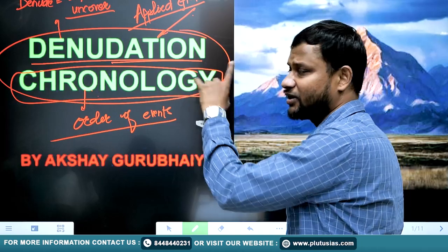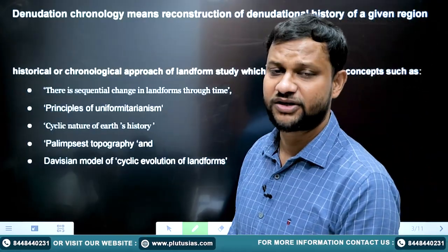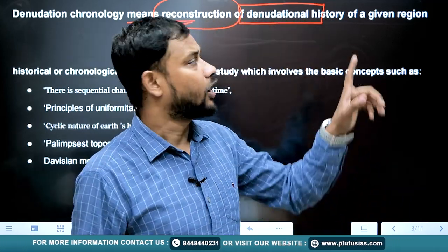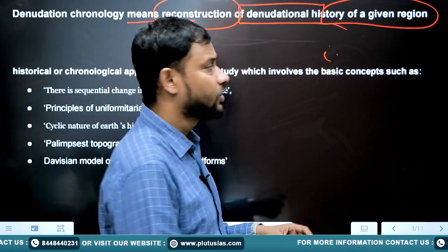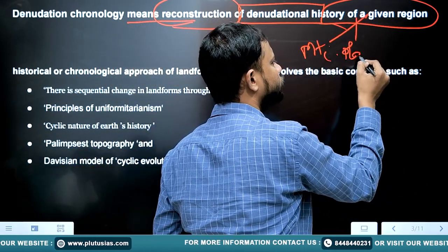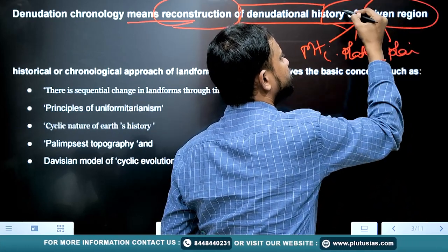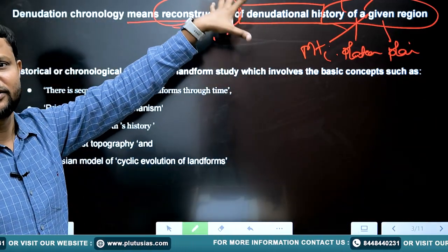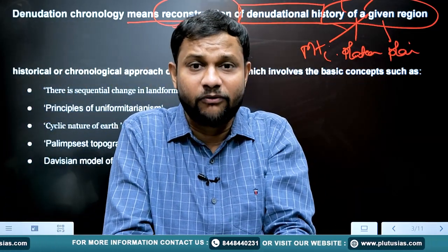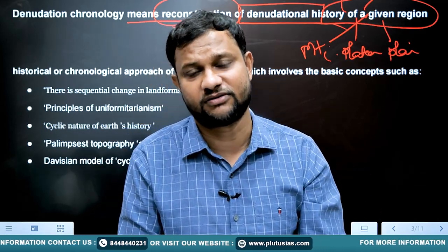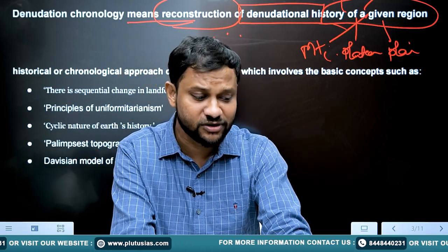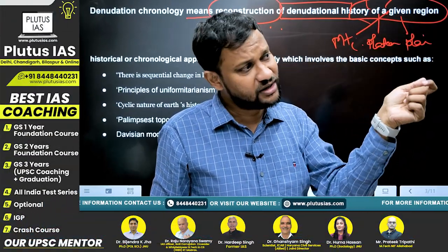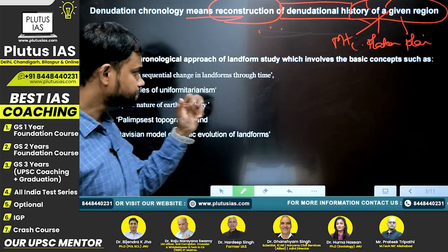Now for the technical definition: denudation chronology means the reconstruction of denudational history — the removal history of a given region. This region could be a mountain, a plain, a river basin, a desert, or any other surface. This process explains what the past was and how events occurred that led to the current development of a landform. For example, studying the Thar Desert through denudation tells us about the past of that region and how it led to its present development.